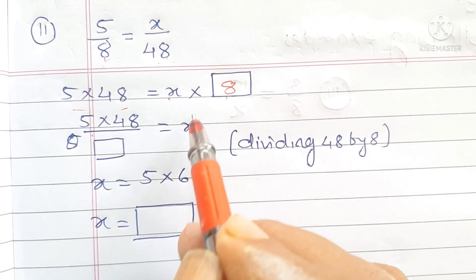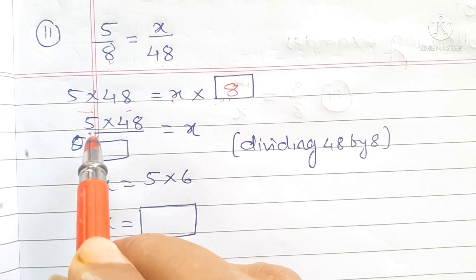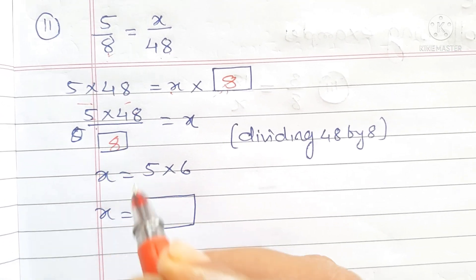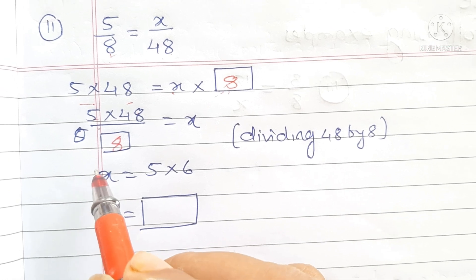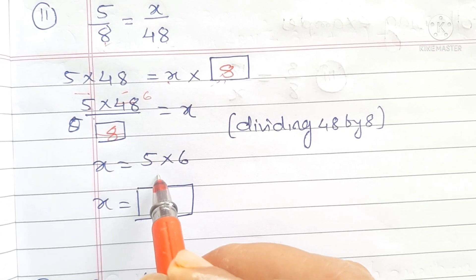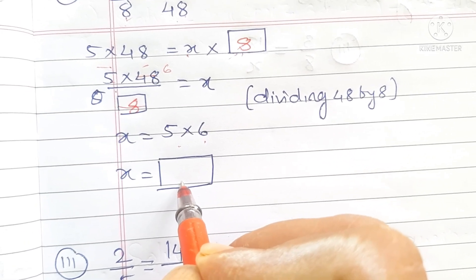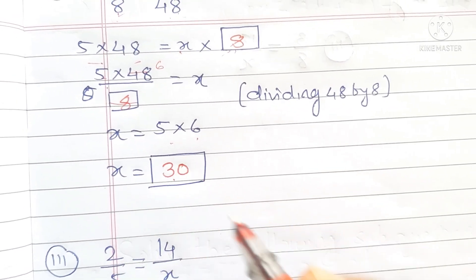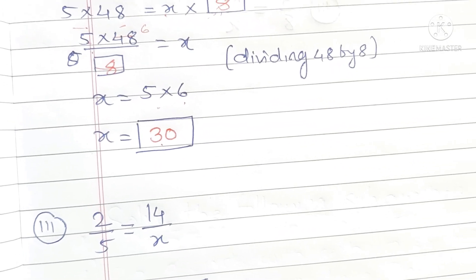So the answer is x is equal to 9. Dividing by 8 both sides gives us 5 into 48 divided by 8, which is 5 into 6, so the answer is 30.